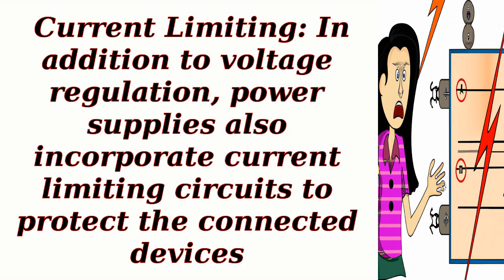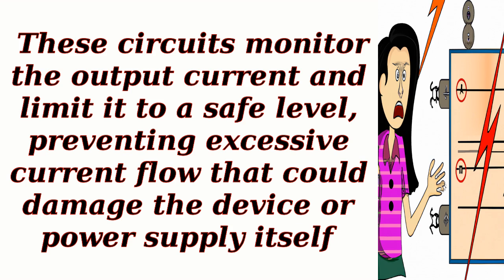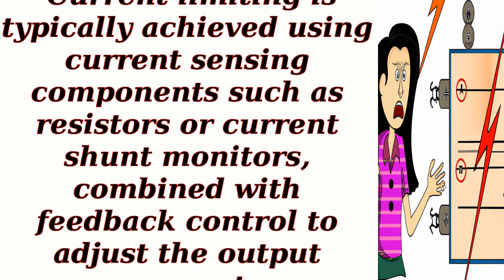Current limiting. In addition to voltage regulation, power supplies also incorporate current limiting circuits to protect the connected devices. These circuits monitor the output current and limit it to a safe level, preventing excessive current flow that could damage the device or power supply itself. Current limiting is typically achieved using current sensing components such as resistors or current shunt monitors, combined with feedback control to adjust the output current.